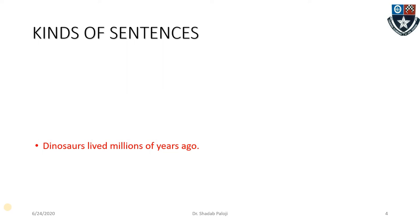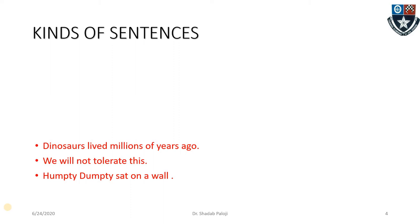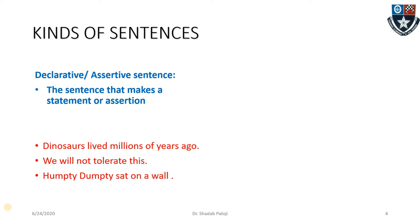There are a variety of sentences. For example: 'Dinosaurs lived millions of years ago,' 'We will not tolerate this,' 'Humpty Dumpty sat on a wall.' These are called declarative or assertive sentences. The word itself is very self-explanatory — declaring something or asserting a fact or even an opinion. A sentence that makes a statement or an assertion is the simplest definition, and it should end with a full stop.